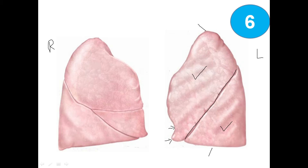On the right lung — again the same: apex, base. This is the superior lobe, this one is the middle lobe, and here is the inferior lobe — three lobes here. And two fissures: this is the horizontal fissure, and this one is the oblique fissure.